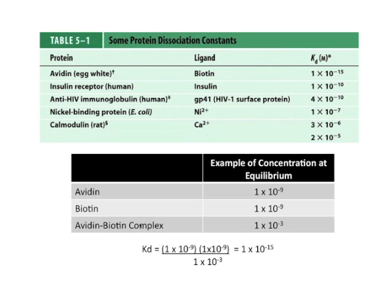If you took the avidin-biotin complex — threw avidin and biotin together in solution — you could measure the concentrations of avidin, biotin, and the complex. Say you had 10 to the minus 9 molar concentration of avidin, and the complex is 10 to the minus 3 molar. If you do the math, KD equals the free avidin concentration times the free biotin concentration divided by the concentration of the complex, and you get 10 to the minus 15 as the KD. The numbers are picked as an example, but the KD is a real number — that's the dissociation constant for the avidin-biotin complex.